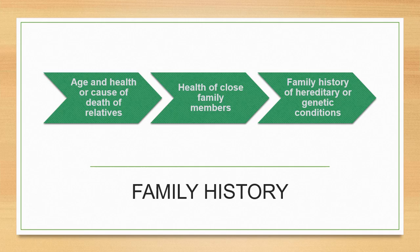You want to ask about family history, especially for things that could be hereditary or genetic. Think about the age and health or cause of death of relatives and the health of close family members. For example, if someone's father had a fatal heart attack at age 55 and they're 54 and having chest pain, the likelihood of it being cardiac is much higher because they have a significant family history.